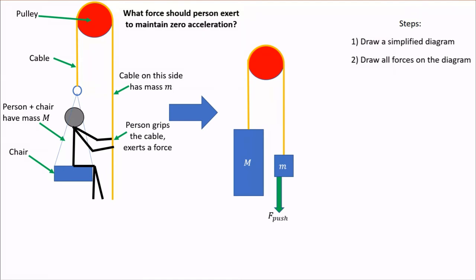Now because of action-reaction, if the person applies a downward force on the little m, then the little m will apply an upward force on the person. So we have to draw an upward arrow acting on the big M box with the same magnitude of F push.